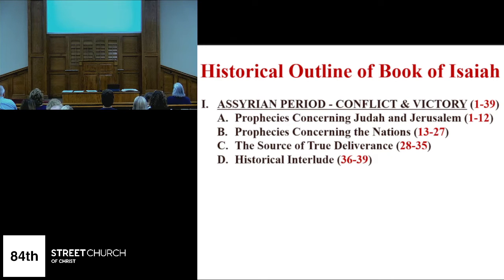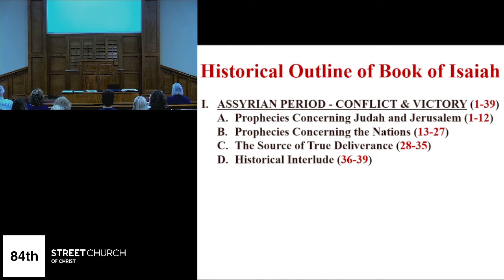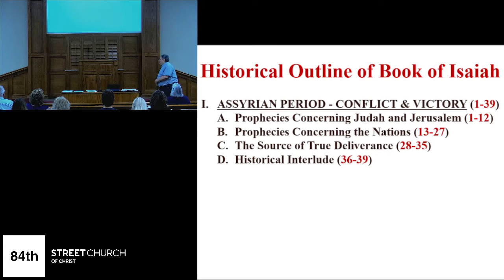Now let's look at a historical outline of the book of Isaiah. There are two periods of time: the Assyrian period — back during the time of what's going to take place in the near term. The northern kingdom is going to be taken away into captivity; the southern kingdom is going to suffer but not go into captivity yet. The prophecies concerning Judah and Jerusalem take place in the first 12 chapters. Then the nations from chapters 13 through 27. The source of true deliverance — the Messiah — is introduced there. Then you have the historical interlude about what happens during the time of Hezekiah as Sennacherib and his armies come.